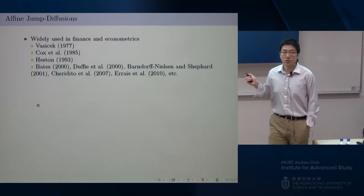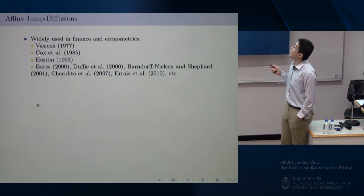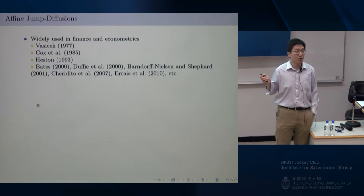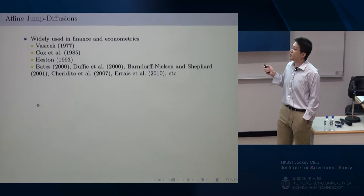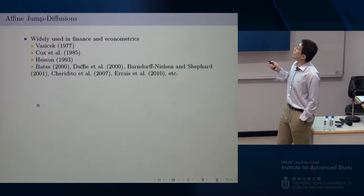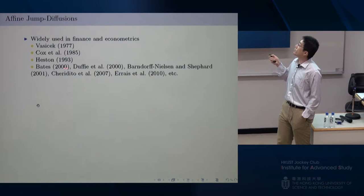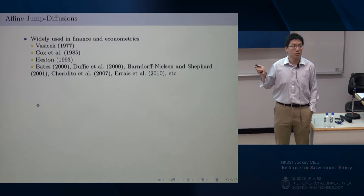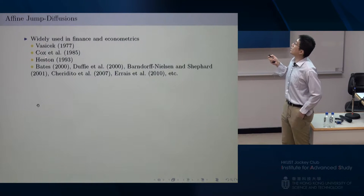The affine jump diffusion is a very popular stochastic process model in finance and econometrics. Famous examples include the Vasicek model or the OU process, which is a simple example of this type of AJD, and the CIR process for interest rates, which is also a special case. There are also many different extensions of these models, including different types of jumps or increased dimensionality.